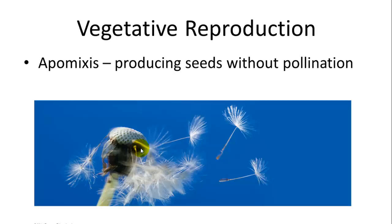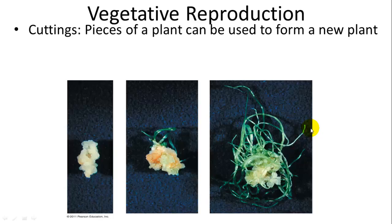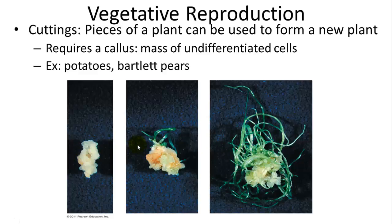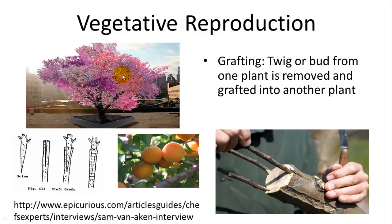Stems can also be used — potatoes are actually stems, and they can shoot stems out from different parts of the potato to produce new plants that make more potatoes. There's also apomixis, which is the production of seeds without pollination — dandelions do this, and it still has the benefit of dispersal. You can also have cuttings where a little piece breaks off; this generally requires a callus — a mass of undifferentiated cells, kind of like stem cells — which can then differentiate into stems, roots, and other parts. Potatoes and Bartlett pears are examples.